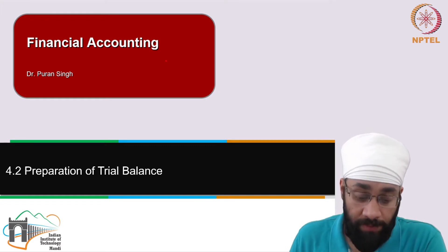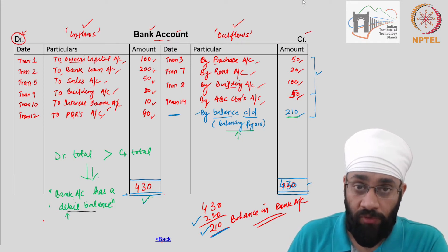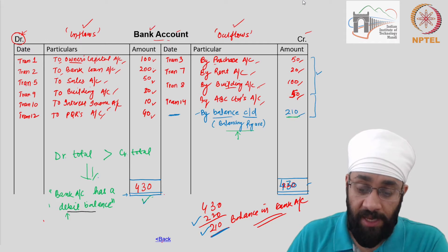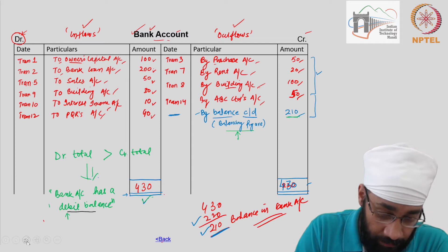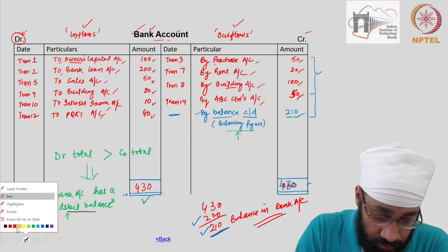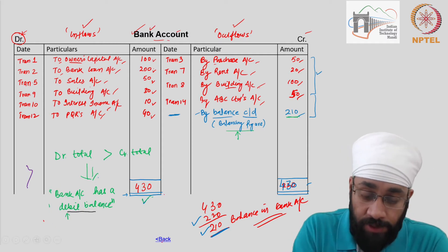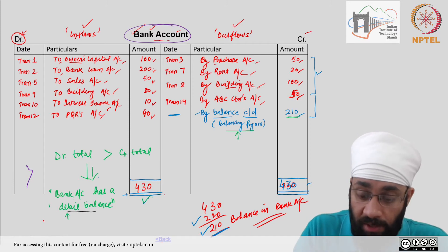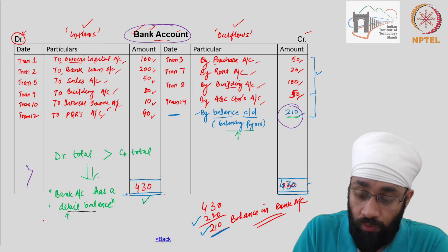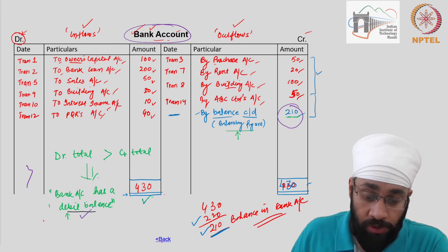Here is a quick revisit to what we did in the ledger posting section. Using the 14 transactions we wrote journal entries, and then all the journal entries relating to bank were brought here. This was the account that we prepared in the ledger posting — all bank transactions are here. The balance in the bank account is 210, and this is a debit balance.